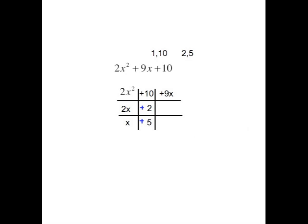So now it's time to check. 2x times 2 is 4x. x times 5 is 5x. If you add 4x and 5x together, you get your 9x. So this checks.